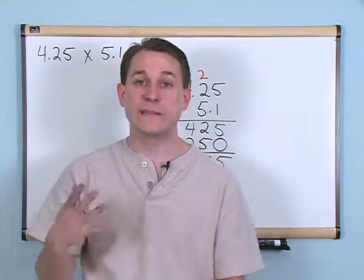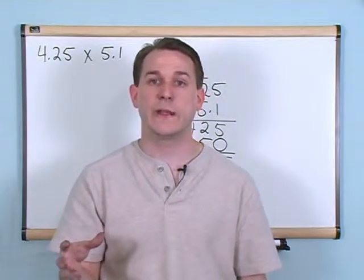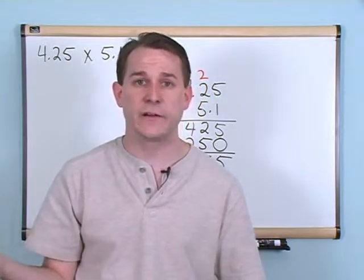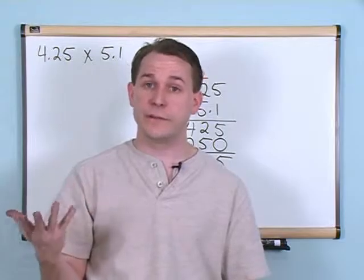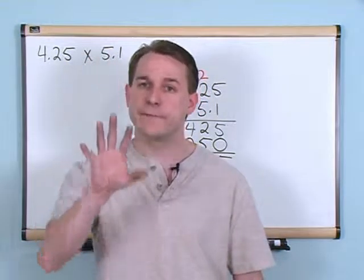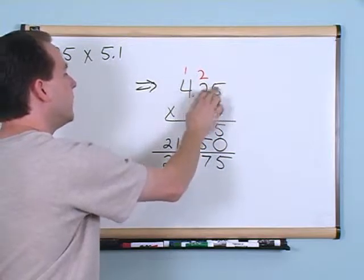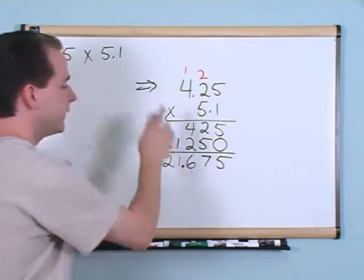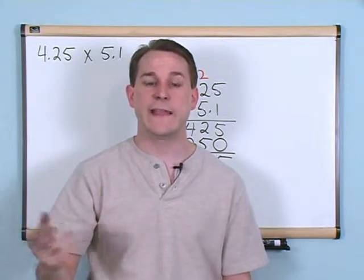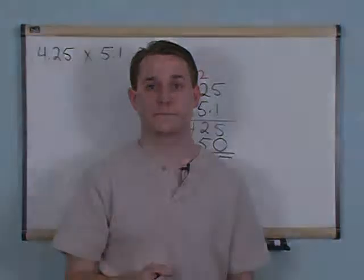So start at the right-hand side of your answer and go left 3 places: 1, 2, 3. Put your decimal point there, and the answer is 21.675. When multiplying decimals, just write the problem, forget the decimals are there, multiply as usual, then count the total decimal places and move left that many places — put your decimal down and that's your answer.